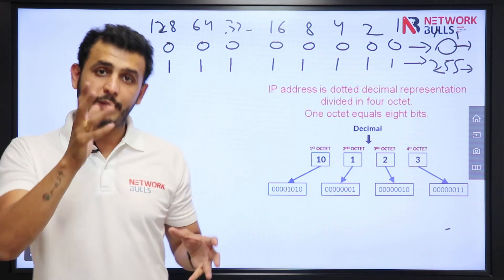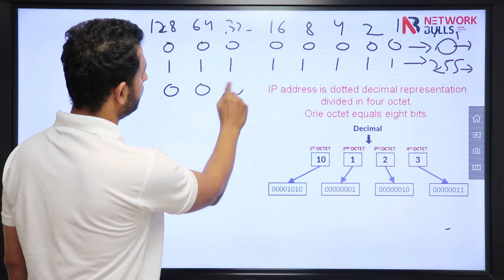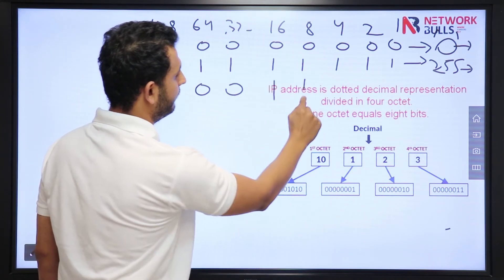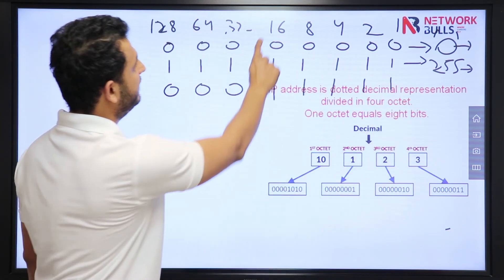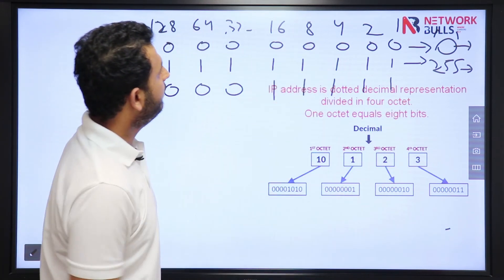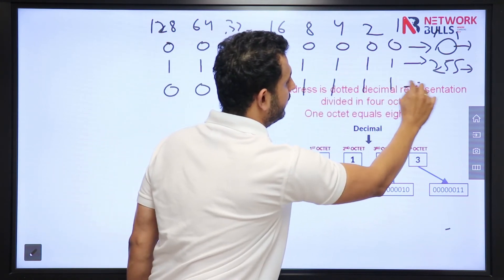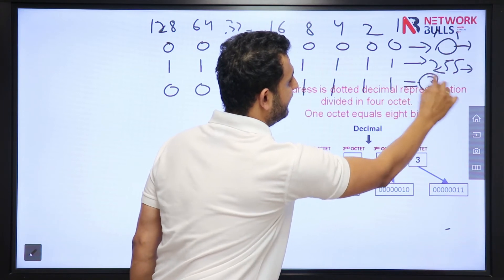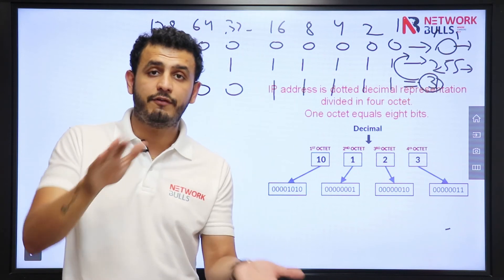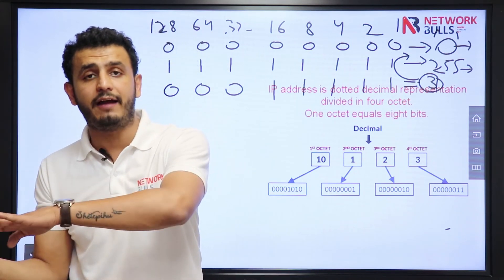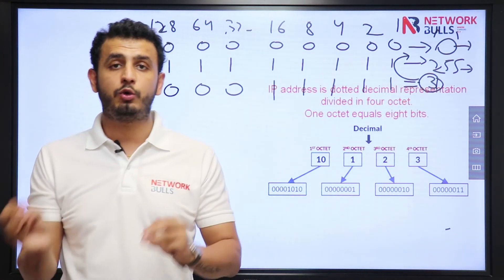Now let me give you one more example. Let's say I turn off some bits and I turn on some. What will be the value now? 16 plus 8 is 24, plus 4 is 28, plus 2 is 30, plus 1 is 31. Value will be 31. It is lying in between 0 and 255. It means in an octet minimum value will be 0, maximum will be 255, and values will always lie in between 0 and 255.